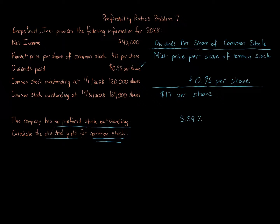The dividend yield of 5.59% represents the rate of return to common stockholders from cash dividends. This is of special interest to investors whose objective is to earn revenue from dividends, because if no dividends are paid — as in many technology industries — you'll have a zero percent return. If you're looking for dividends rather than growth, you won't want that. This shows how important some ratios are to certain types of investors over others, and how these ratios are very specific to what you're focused on when evaluating a company's financial statements.